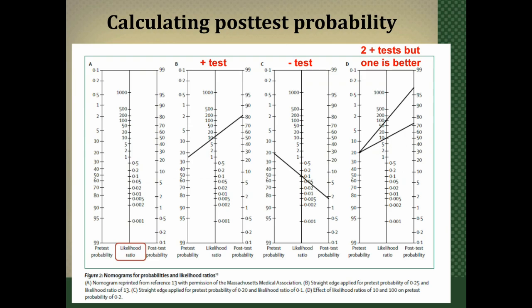The second thing likelihood ratios are useful for is determining post-test probability. Fagan's nomogram is a paper-based method for determining post-test probability. It has three components: pre-test probability on the left axis, the likelihood ratio in the middle, and post-test probability on the far right axis. If your test is positive, you use the upper part of the nomogram; if negative, the lower part.